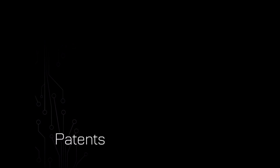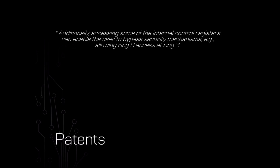When I'm beginning research on something really big and unknown, a good place to start is sometimes with patents, because sometimes you can find information in patents that you can't find in any other documentation. Given this idea of the privilege model and rings in x86, imagine my surprise when I was sifting through patents and I saw this little blurb — just nonchalantly buried in the middle of a patent on a completely different idea. It said: 'Additionally, accessing some of the internal control registers can enable the user to bypass security mechanisms — for example, allowing ring zero access at ring three.' My head kind of exploded when I saw this. All of our security on x86 is based around this idea of rings of privilege, and this blurb is telling me there may be some way to circumvent all of that in one fell swoop.